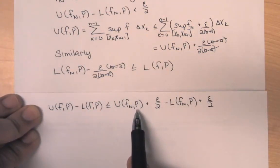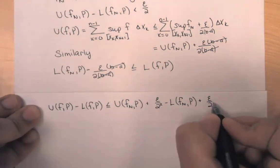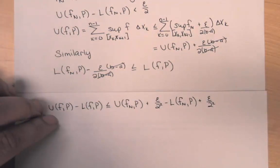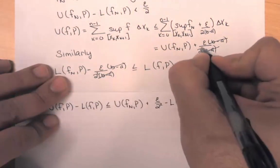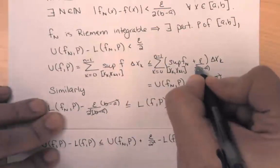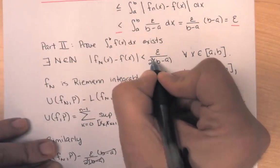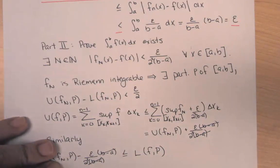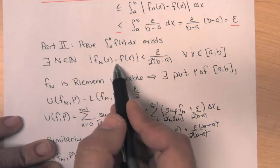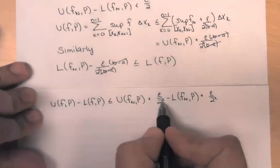Let's replace ε/2 with ε/4 throughout — we can do this because uniform convergence allows us to make the bound as small as we like. So let's square those 2's: use ε/(4(b−a)) for the uniform convergence bound and ε/4 for the Riemann integrability condition. With uniform convergence comes great power — specifically, a power of 2.